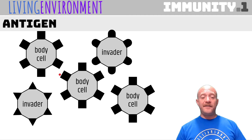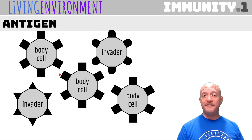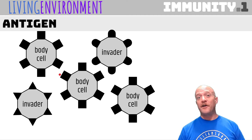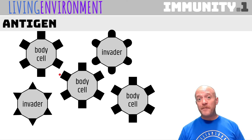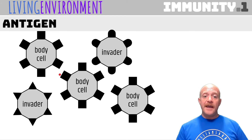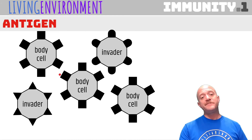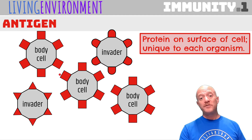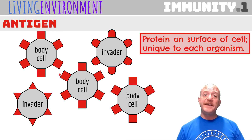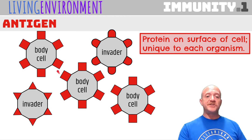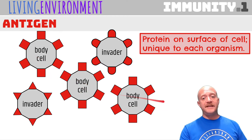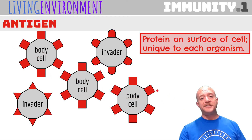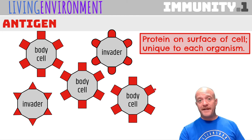Recall that we have DNA in every single cell in our body, and our DNA is unique. So the proteins that we make will be unique from other individuals. An antigen is basically these proteins that are on the surface of the cell, and it will be unique for each organism. So my cells, for example, may have this shape antigen — the rectangular or square-shaped antigen.